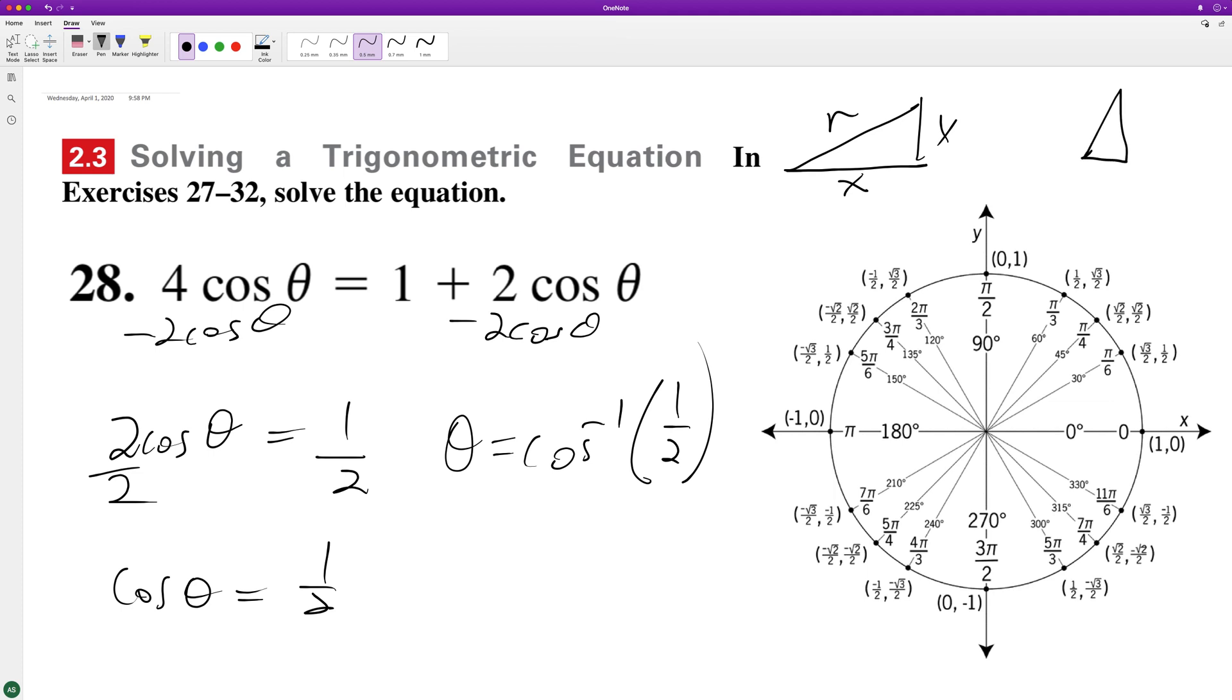So it's going to be 30, 60, 90 triangles. So one, two, three. So one half.